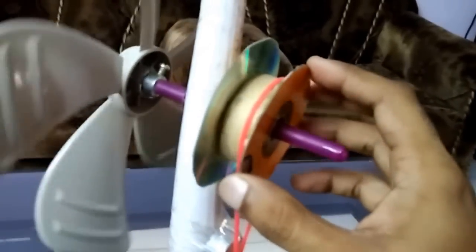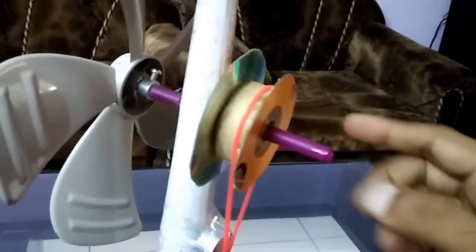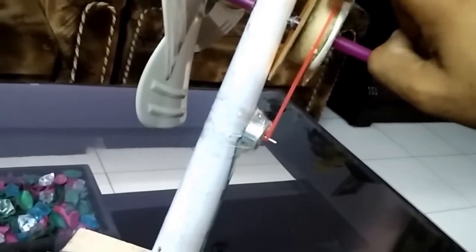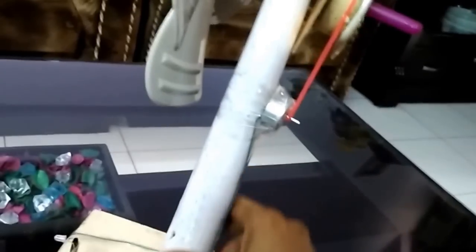Then we took two old CDs and cut them short and fixed them on both sides of this wooden block so that this rubber band doesn't come off. And this is a small motor that we purchased from local electrical shop.